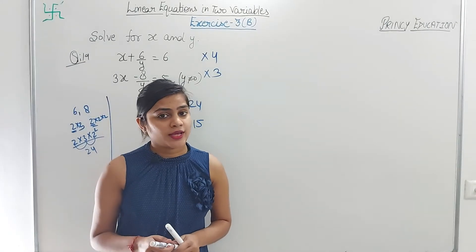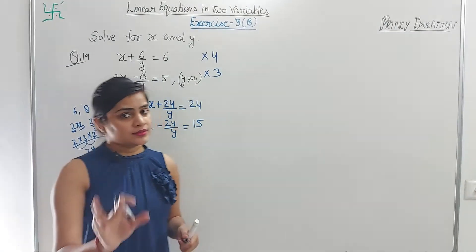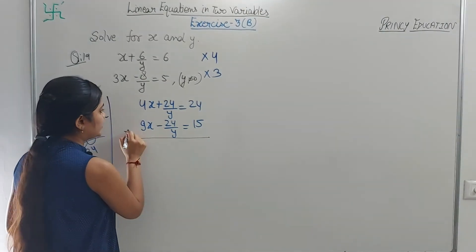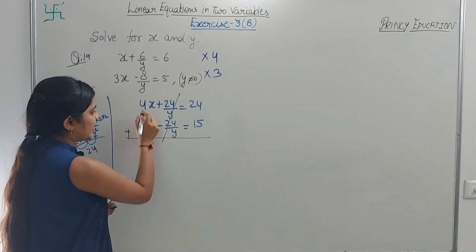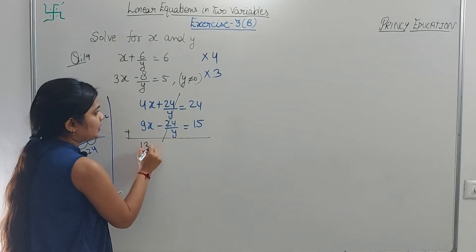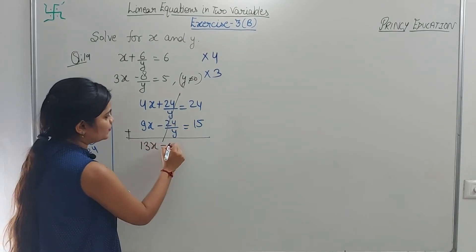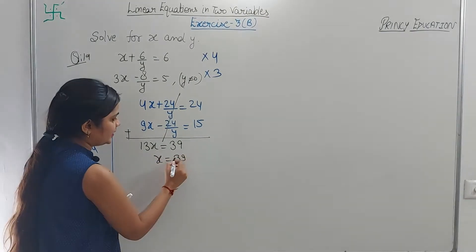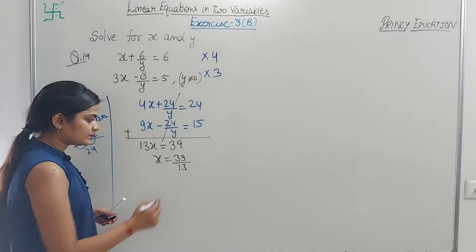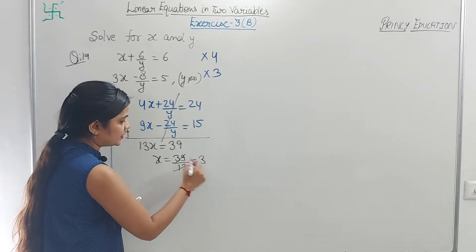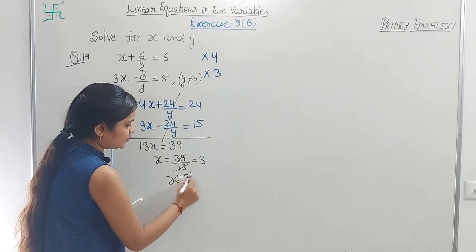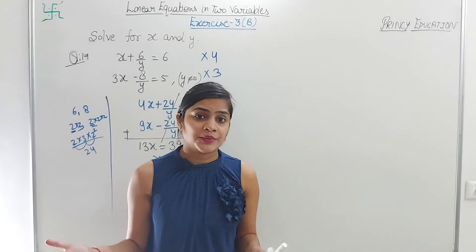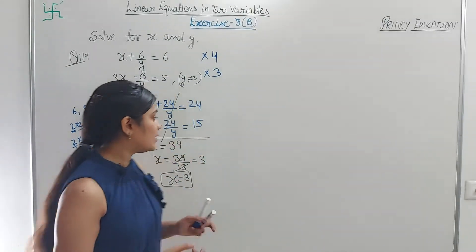Adding: 9 + 4 = 13x. 24 + 15 = 39. So 13x = 39. Therefore x = 39/13 = 3. We easily found x = 3.